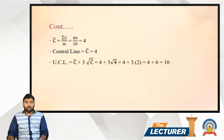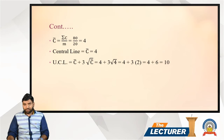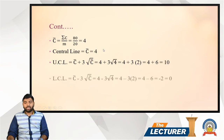The UCL, which is the upper control limit, is given by C-bar plus 3 times the square root of C-bar. Substituting the value: 4 plus 3 times 2 equals 10. So UCL is 10.